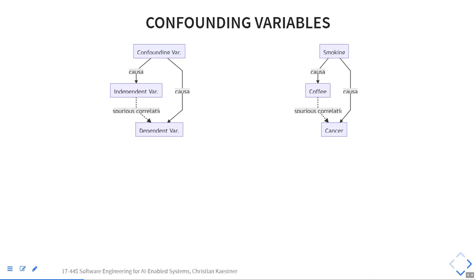Even when we see correlations and there is something behind them, it might not be what we're expecting. The classic example is that coffee is fairly strongly correlated with cancer — coffee drinkers are more likely to get cancer. But there's no causation: the actual cause is smoking, and smoking is fairly strongly correlated with coffee consumption. The model may not pick up on the right causes; it's reasoning about correlations, not causation.